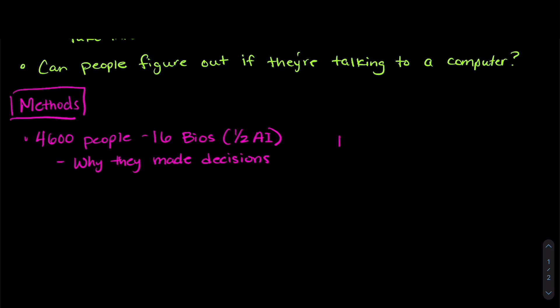And a separate group of people looked at the traits of the bios. So these are things like whether the bios were sensical, whether they were repetitive, what their grammar was like, and a variety of other things. And so the question was, these 4,600 people, could they tell the difference between the bios written by real people versus the artificial intelligence ones?